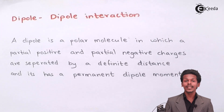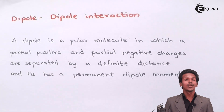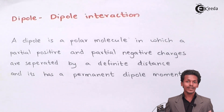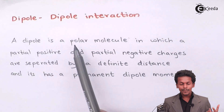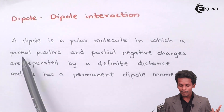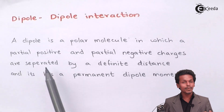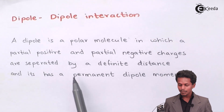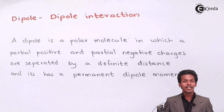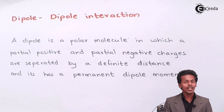We are now going to talk about what is dipole-dipole interaction. The first thing we should know is what a dipole actually is. A dipole is a polar molecule in which a partial positive and partial negative charge are separated by a definite distance, and it has a permanent dipole moment.